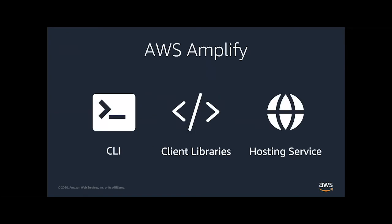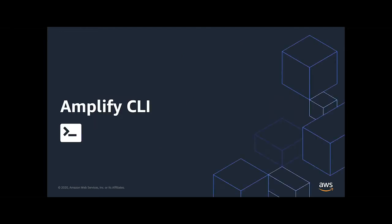You have these three main pieces: the Amplify CLI, the Amplify libraries, and the Amplify hosting service. The CLI allows you to spin up AWS services. The client library allows you to interact with those services from a web or mobile app. The hosting service is an AWS service that allows you to deploy static or dynamic websites, with future SSR support as well for things like Next.js.